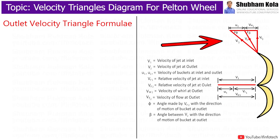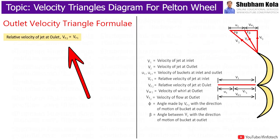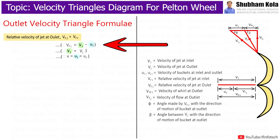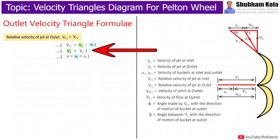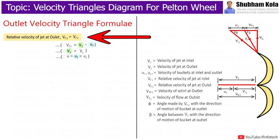Now moving to the velocity triangle at outlet: Vr2, the relative velocity at outlet, is equal to Vr1, the relative velocity at inlet. This is because the relative velocity is the difference between the jet velocity and the bucket velocity, and since V1 = V2 and U1 = U2 = U, therefore Vr2 = Vr1.